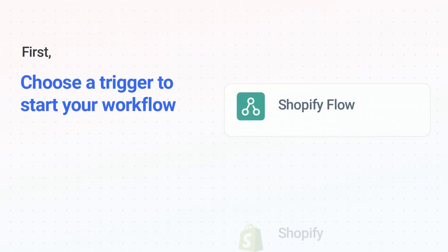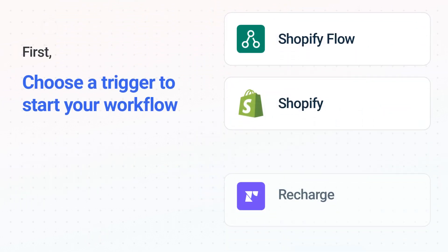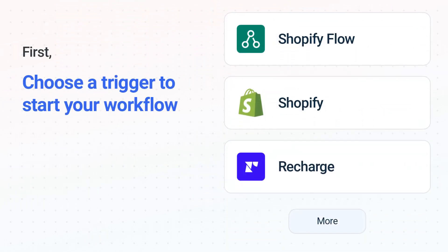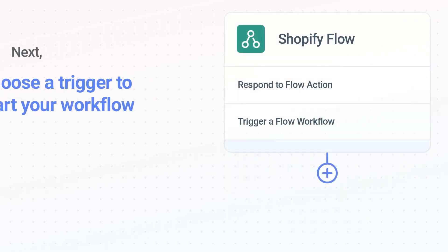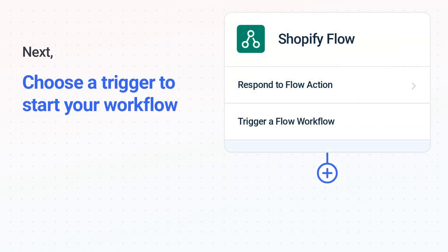It's easy to get started. First, choose your trigger app, Shopify Flow. Next, choose the trigger event from the list. This is what kicks off your workflow.